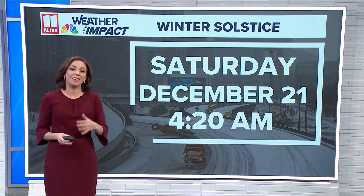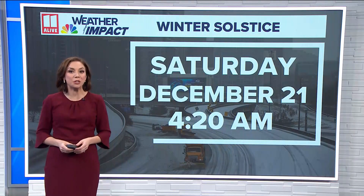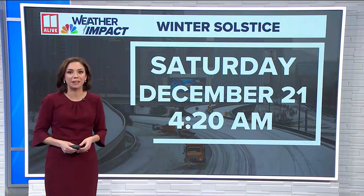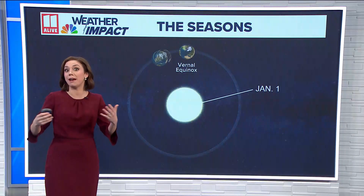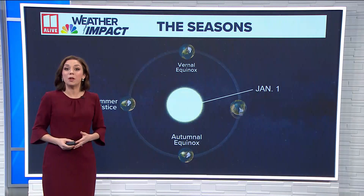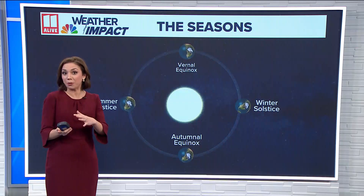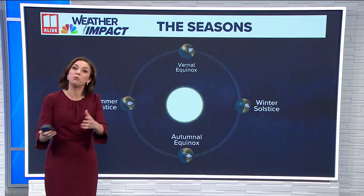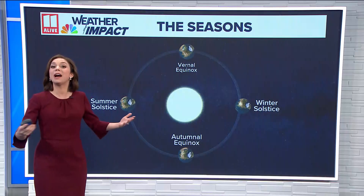Winter officially arrives this weekend. Our winter solstice is Saturday morning at 4:20 in the morning. So what actually is that and why do we have the seasons? Well, it all has to do with the earth being tilted at 23 and a half degrees on its axis as we rotate around the sun throughout the year.